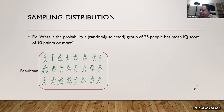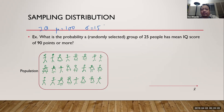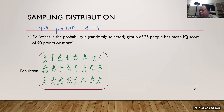Here's an example. Same IQ situation: mean is 100, standard deviation is 15 for individuals. The question is: what is the probability that a randomly selected group of 25 people has a mean IQ score of 90 points or more? They're talking about groups of 25 people — that's my sample of size 25.